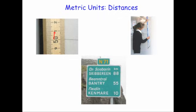Here we also have a ruler with 100 centimetres — it's a metre ruler. That means that 1 metre is 100 centimetres. We've also got a road sign, because whenever you measure distances between cities — very large distances — you use kilometres. The word 'kilo' means a thousand, so each kilometre is 1000 metres.